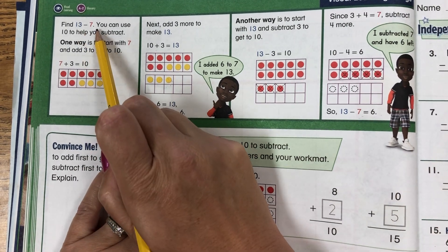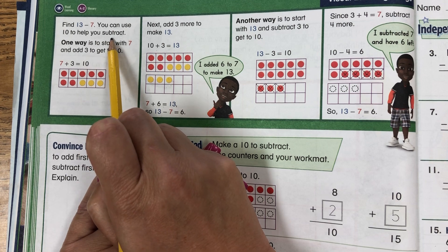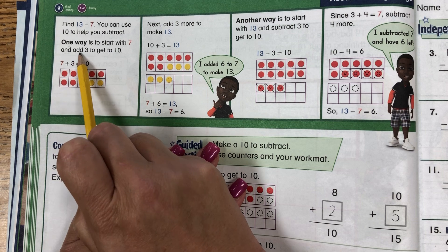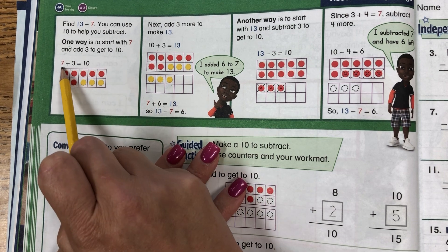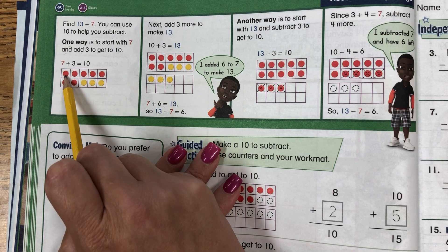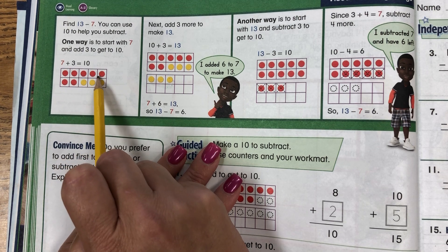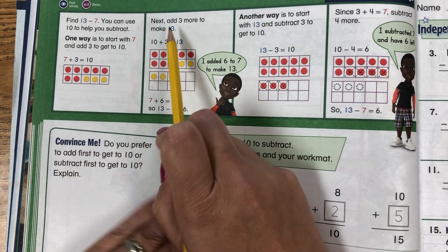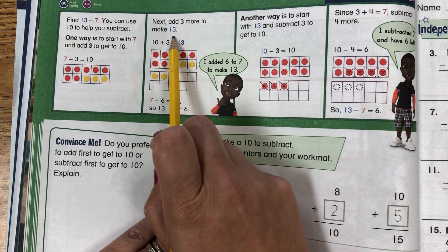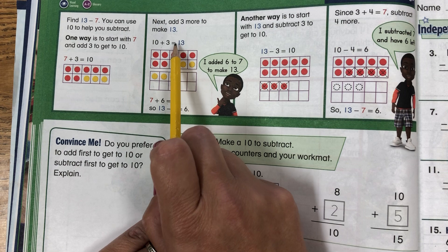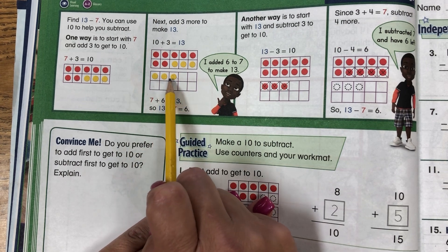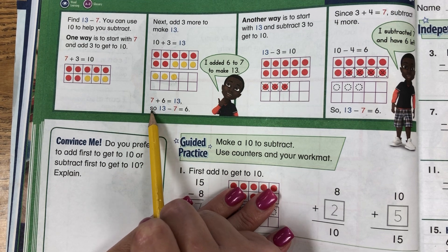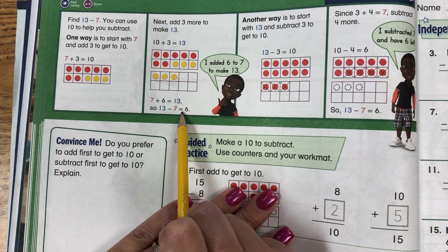Find 13 minus 7. You can use 10 to help you subtract. One way to start is with 7, and add 3 to get to 10 — 7 plus 3 equals 10. There it has 7 red counters and 3 yellow counters. Next, add 3 more to make 13. 10 plus 3 equals 13. So they added 3 more yellow counters. 7 plus 6 equals 13.